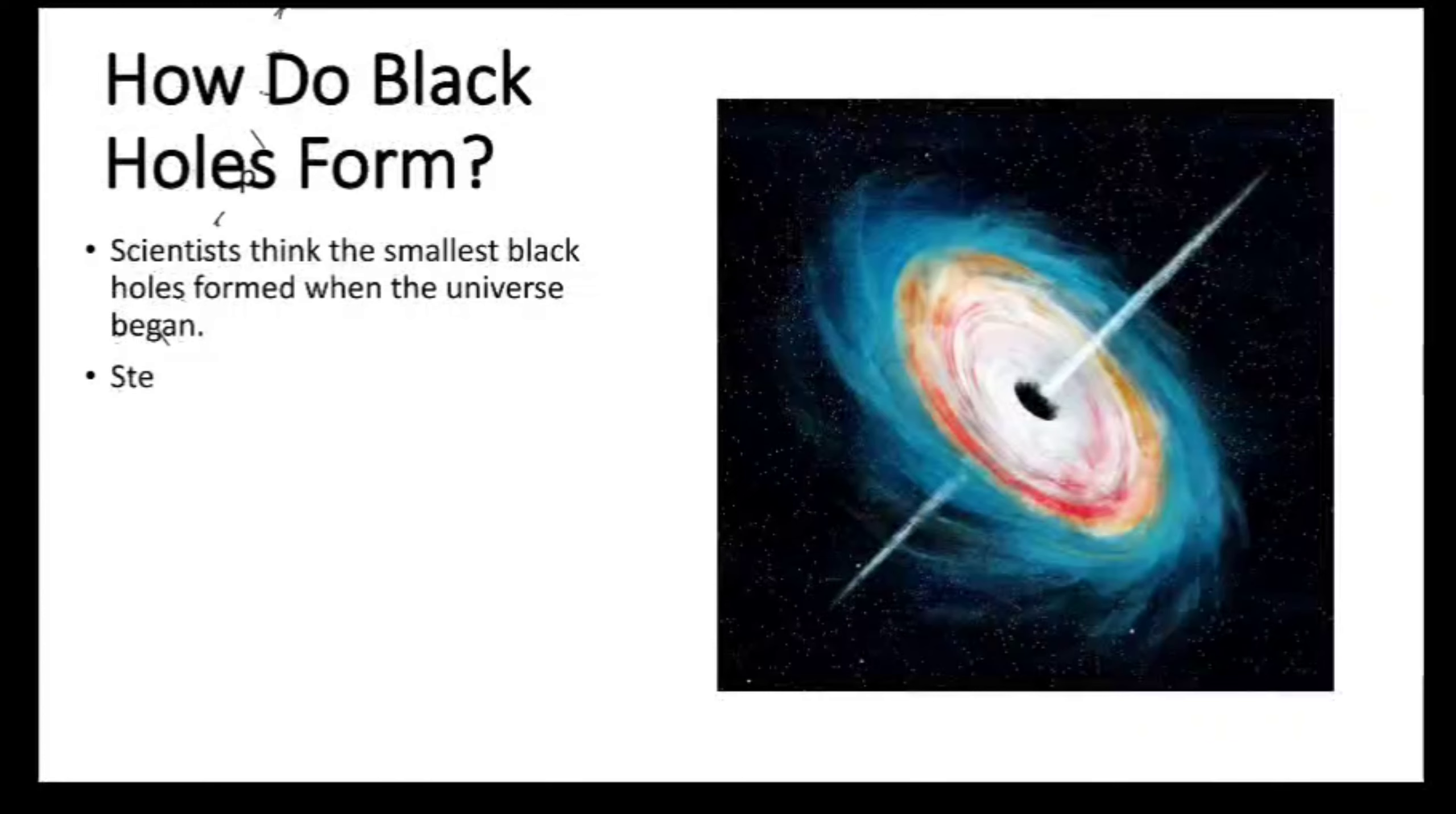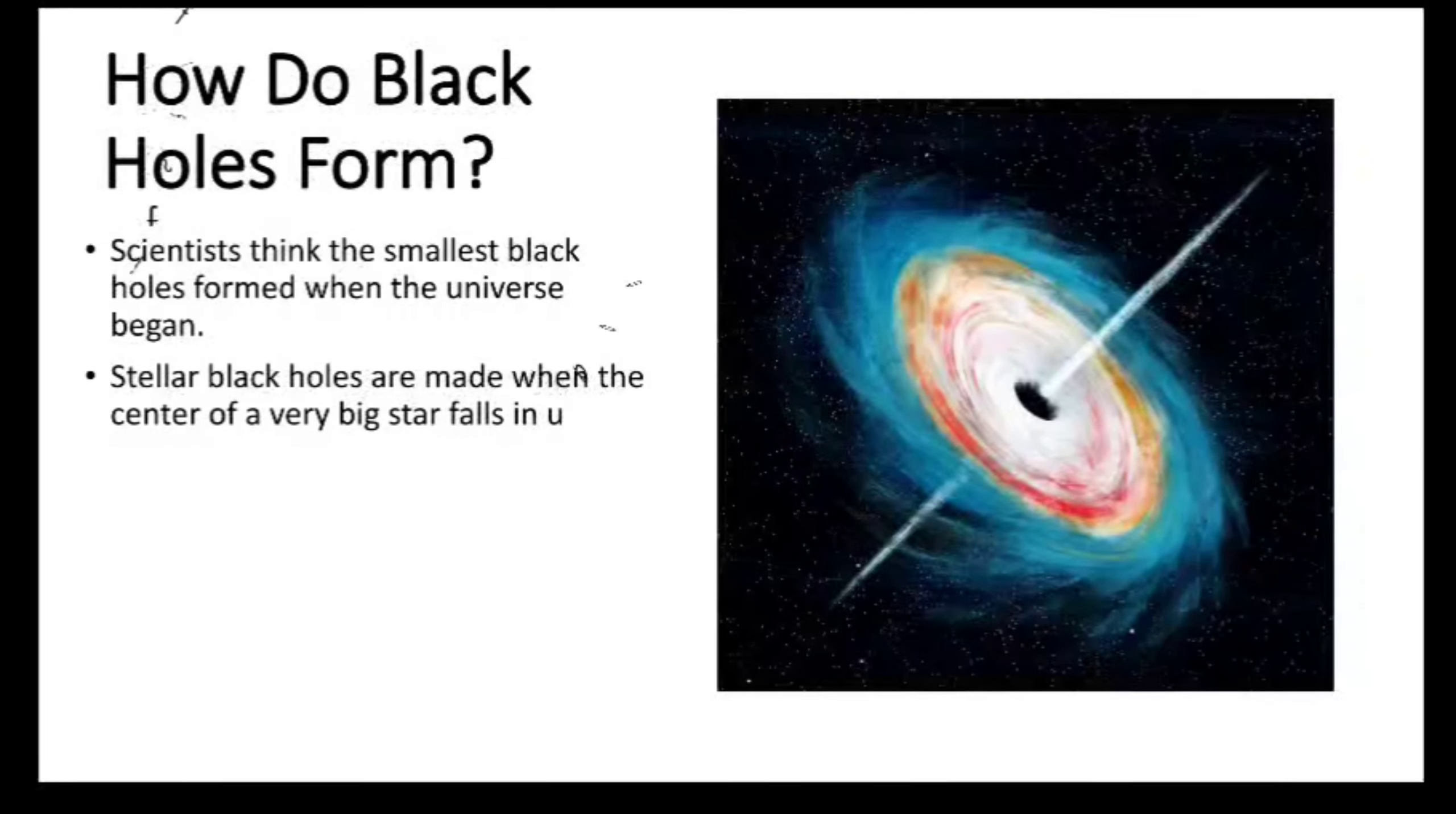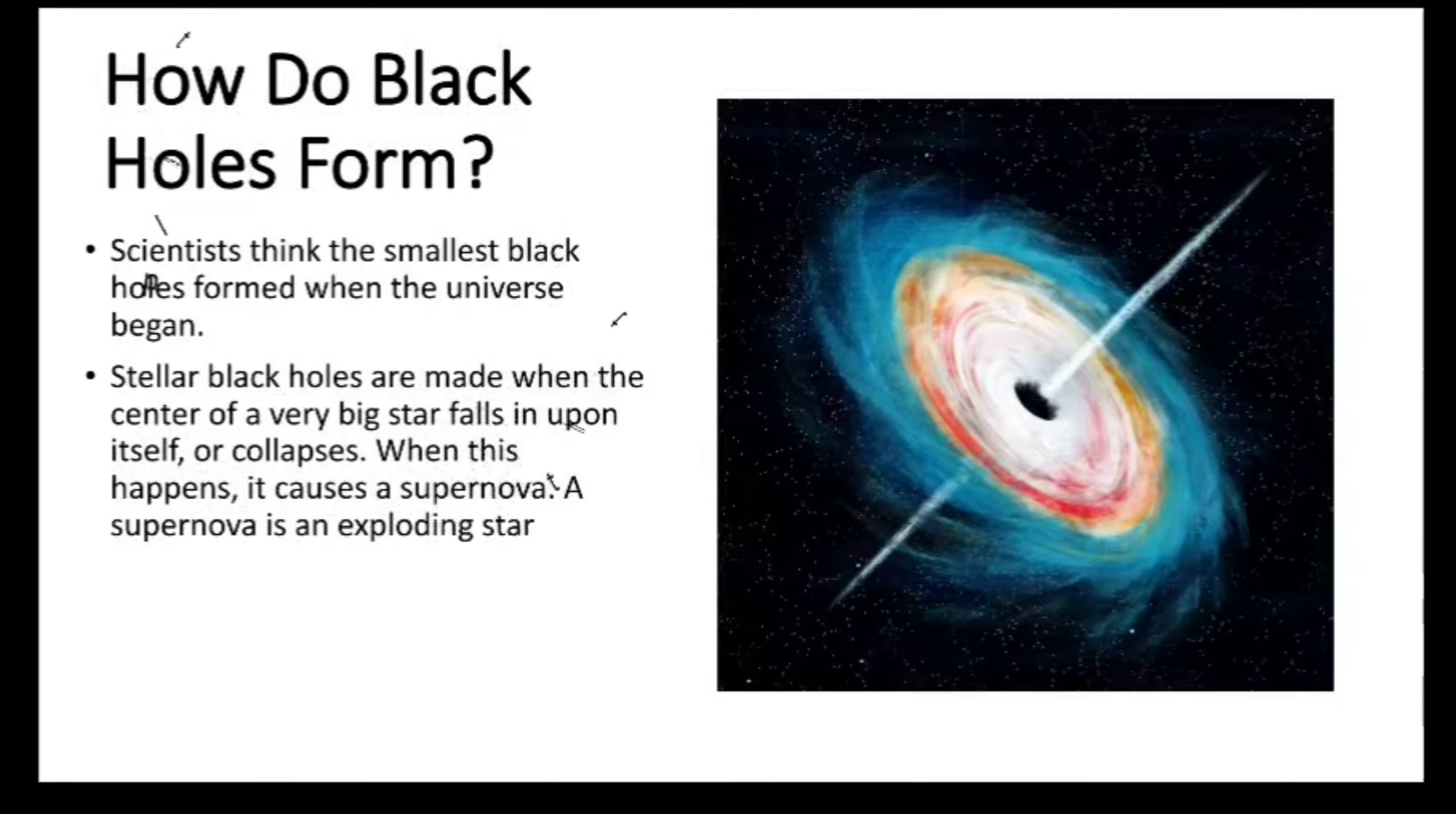Stellar black holes are made when the center of a very big star falls in upon itself, or collapses. When this happens, it causes a supernova. A supernova is an exploding star that blasts part of the star into space.